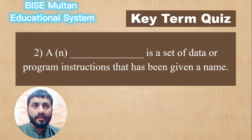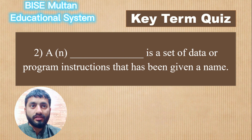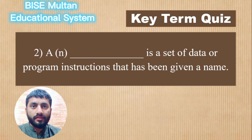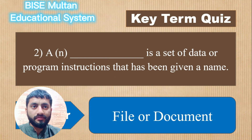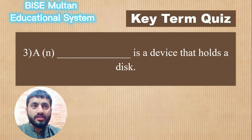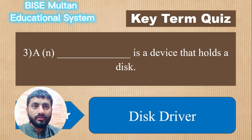Question 2. A blank is a set of data or program instructions that has been given a name. The answer is File or Document. Question 3. A blank is a device that holds a disk. The answer is Disk Drive.